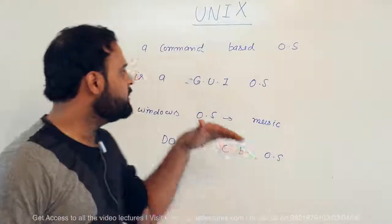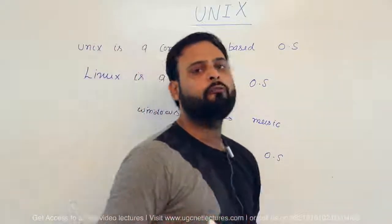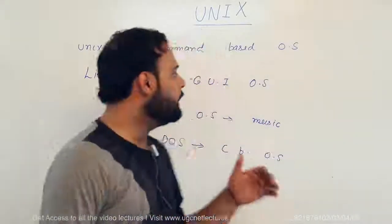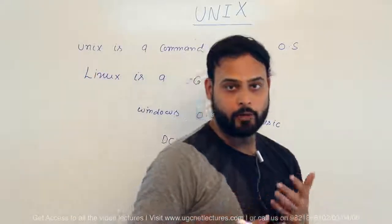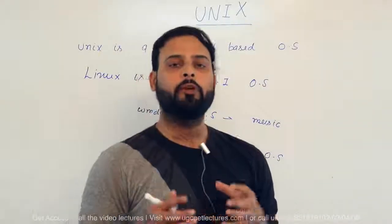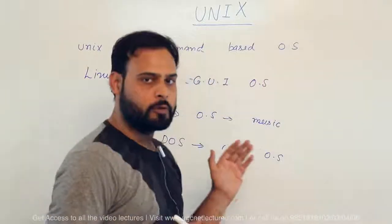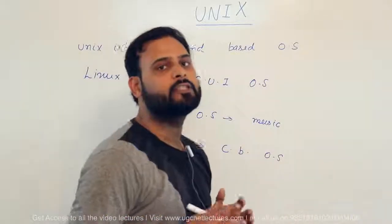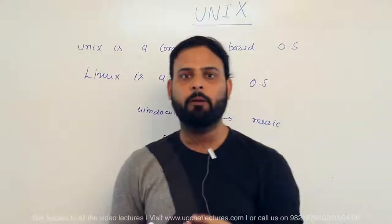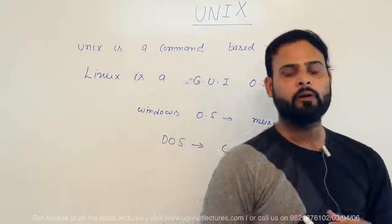Now let's explore the difference between UNIX and Linux. There are a lot of flavors available in Linux. What is the difference between a flavor and a version? Flavor means different companies produce the same operating system — that is called a flavor. Same company produces the same OS — that is called a version. For example, Windows 95, Windows 98, Windows 2000, Vista are all versions because they are all produced by Microsoft.